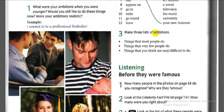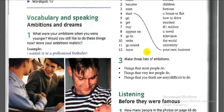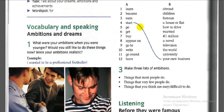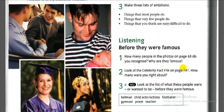Exercise three: make three lists of ambitions — your own list, things that most people do, things that very few people do, and things that you think are easy or difficult to do. Make three lists similar to this one.